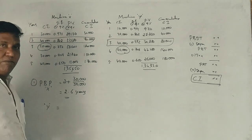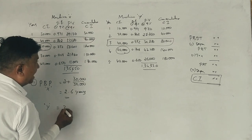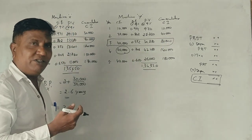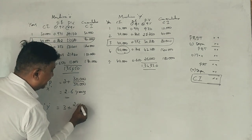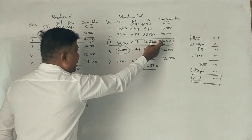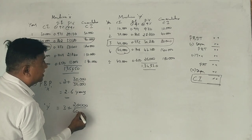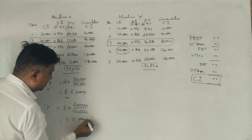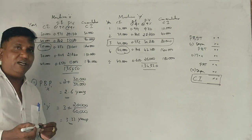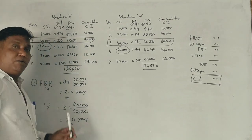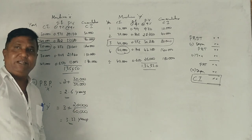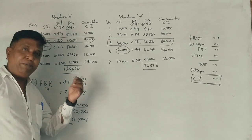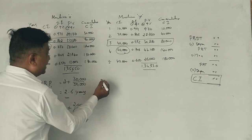So third year, 100 is covered in 80. Remaining 20,000 out of 60,000 per year, which is 20,000 divided by 60,000 equals 0.33. So 3.33 years. Machine X is selected based on payback period.